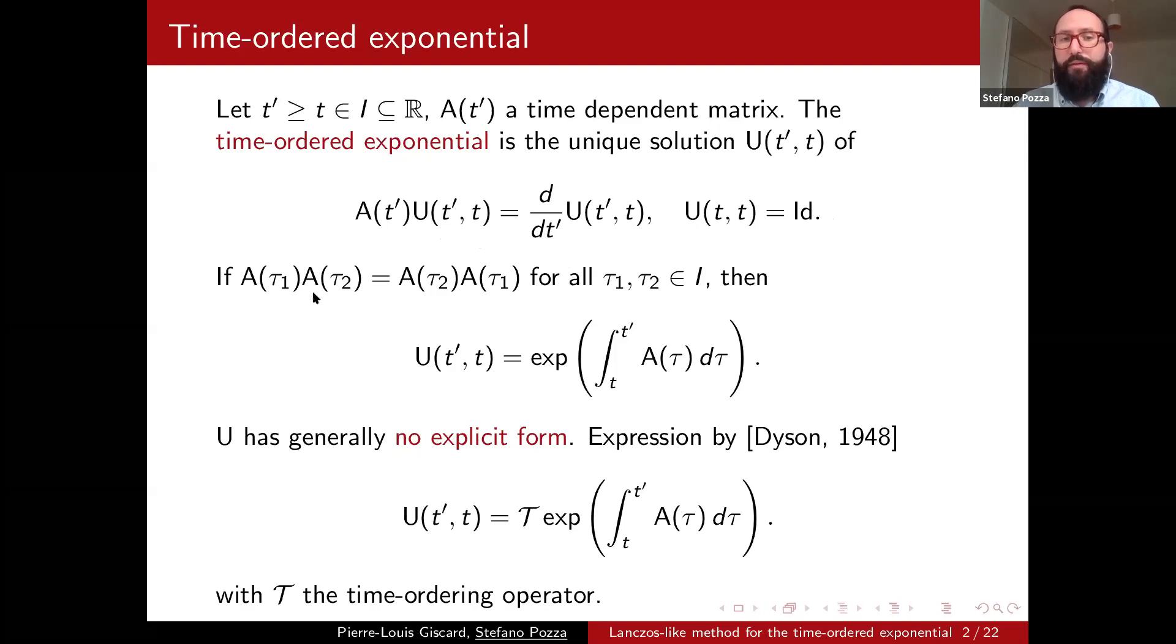For example, in the nice case in which the matrix A is commuting with itself for all the times in our interval I, this U has a nice expression that can be written in this way. Here you see we have this matrix exponential of the integral of the matrix A, and then we can use different kinds of techniques to approximate something like that. But in general, we don't have an explicit form and this is the problem we are going to deal with.